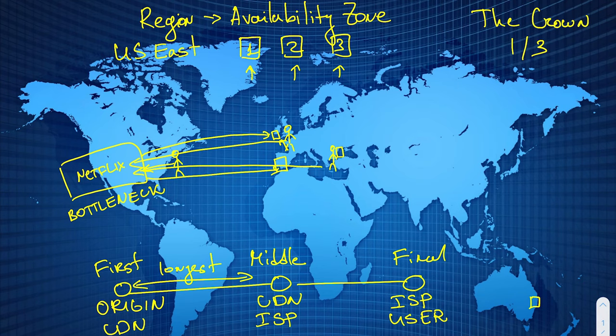This is obviously a significant oversimplification of the real world in terms of capacity allocation, but at a high level, that's how the video streaming pipeline end to end looks. Some of the most well-known CDN providers are Cloudflare, Amazon CloudFront, Akamai, Microsoft Azure CDN, Google Cloud CDN, and many others. CDN does not apply only to videos — it also applies to regular images or any other code for regular applications, but it is particularly important for video because of the scale of data that needs to be pushed.